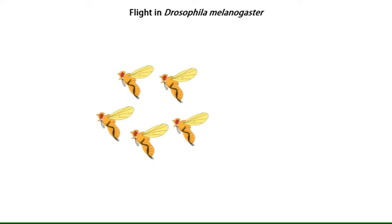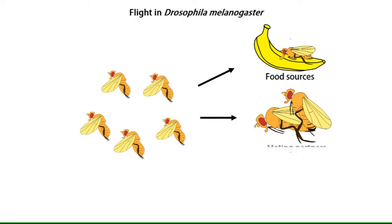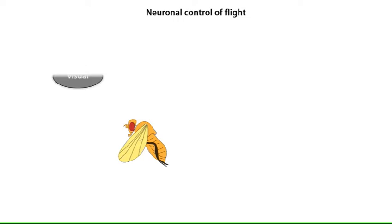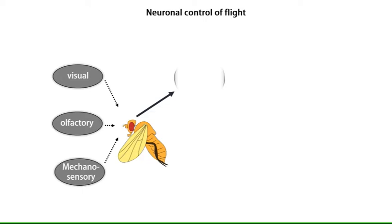In natural conditions, flying insects, including the common fruit fly, need to maintain longer flight bouts in order to find sources of food, suitable mating partners, and egg-laying sites. Such coordinated flight requires the integration of multiple sensory inputs by groups of neurons within the central brain.